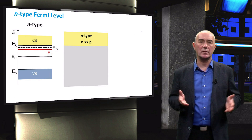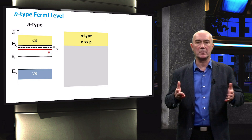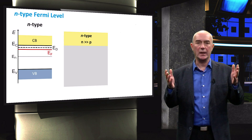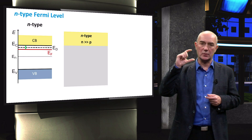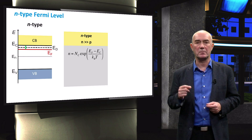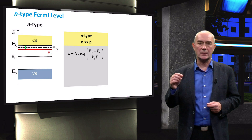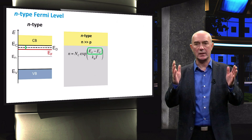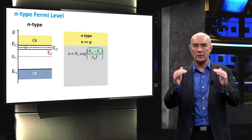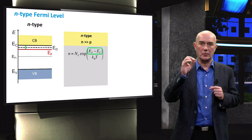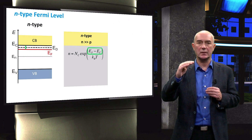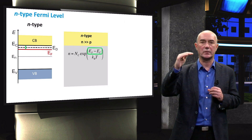From the concentrations of charge carriers, we can calculate the position of the Fermi level. Here we see the band diagram of an N-type semiconductor. We are interested in the difference between the conduction band and the Fermi level. We calculate it by recalling the equation from a previous video. The quantity EF minus EC is present in the equation. We expect that the Fermi level is below the edge of the conduction band EC, so this quantity should be negative — the Fermi level position is negative with respect to the conduction band edge.